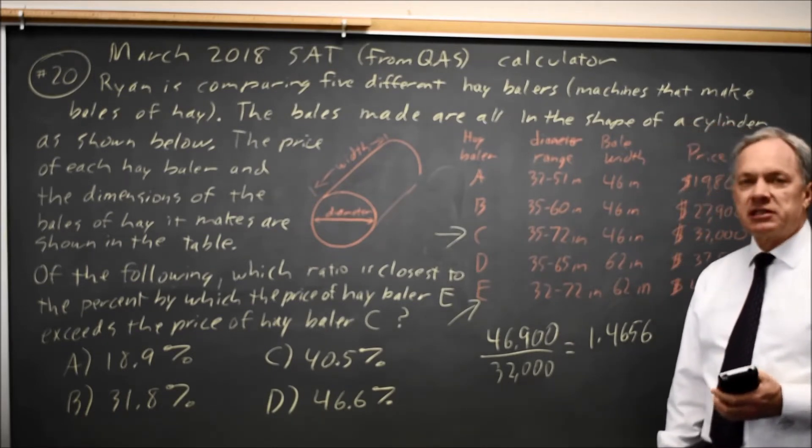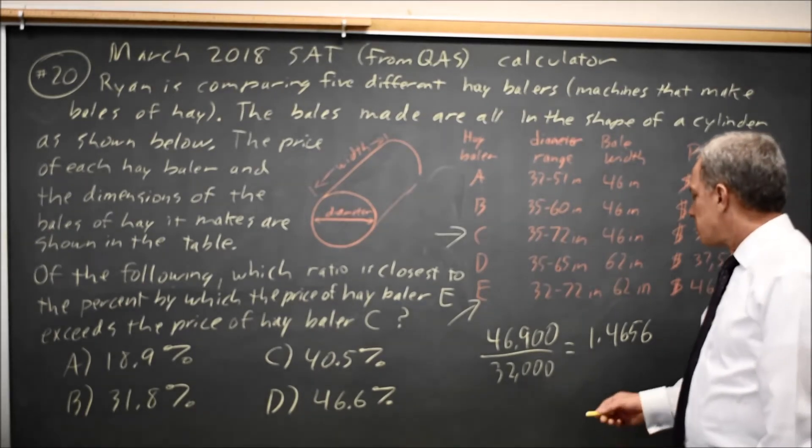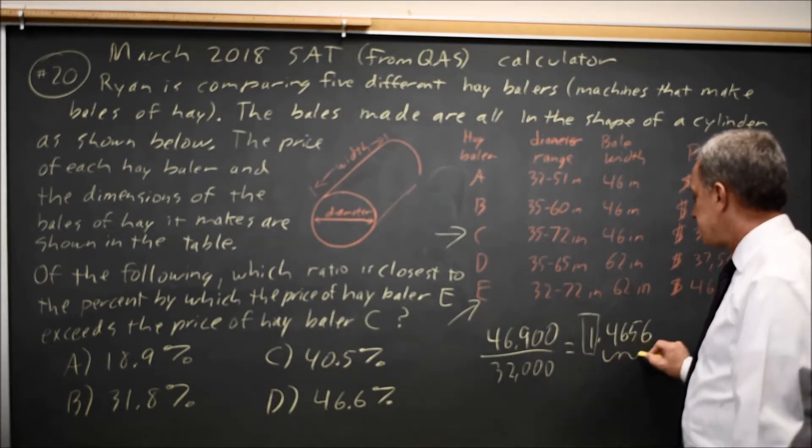If this ratio was exactly 1, the amount by which we exceed the price of C would be 0, so the 1 is just matching the price and then the decimal is how much we've exceeded.